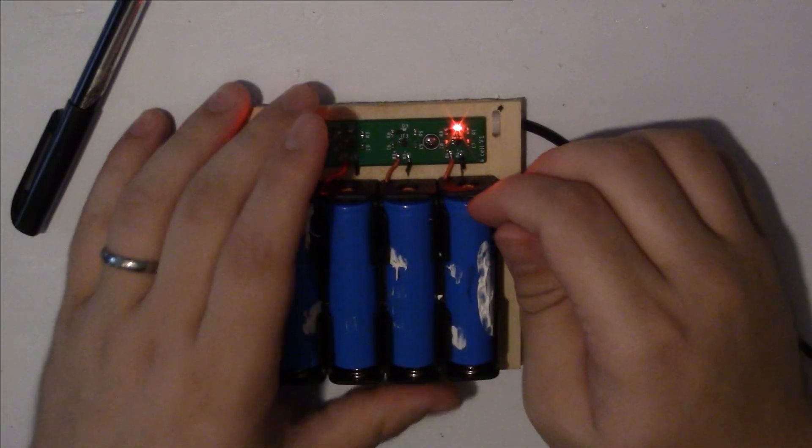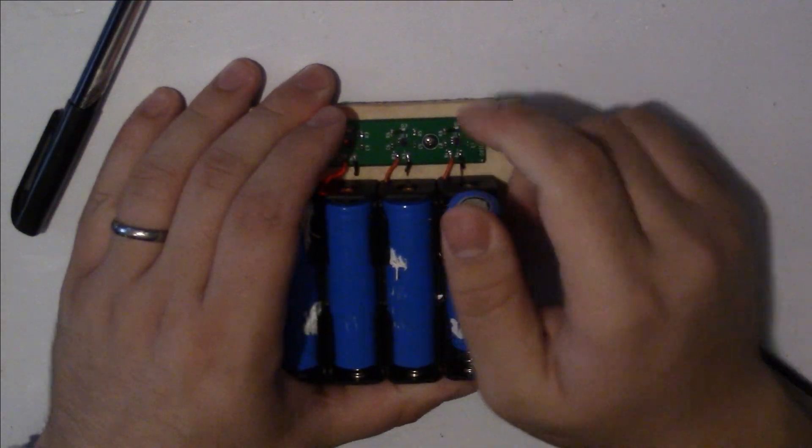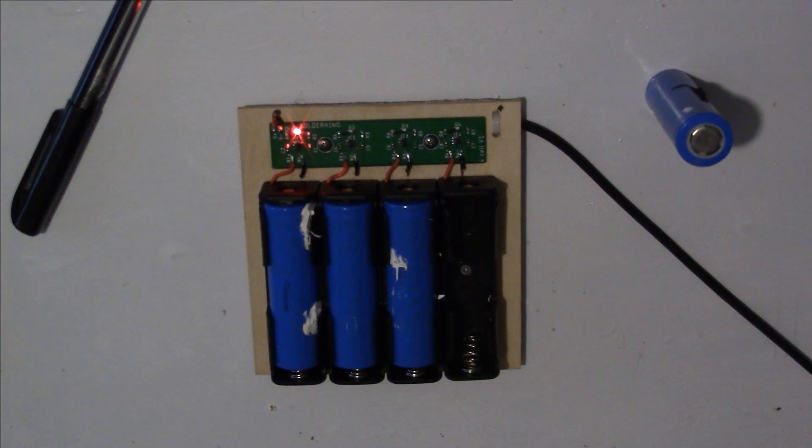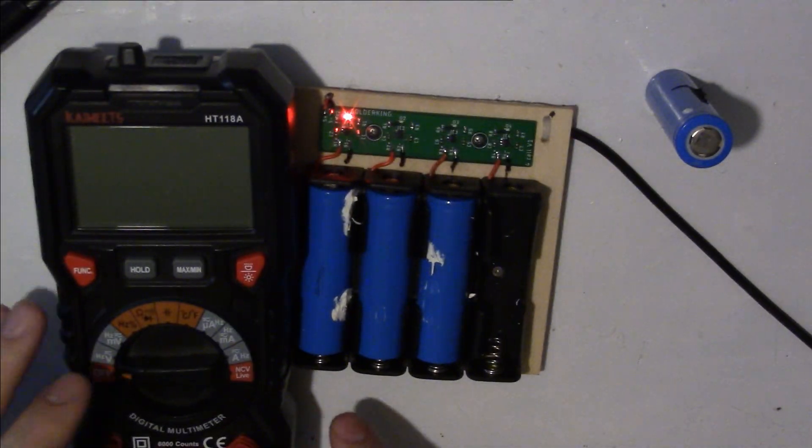After a few hours of charging I noticed two LEDs were still lit. The LEDs turn off when the cell is charged so I did some poking around and found that the two cells were the problem. They reached a max voltage of 4.1 volts which honestly isn't that bad.